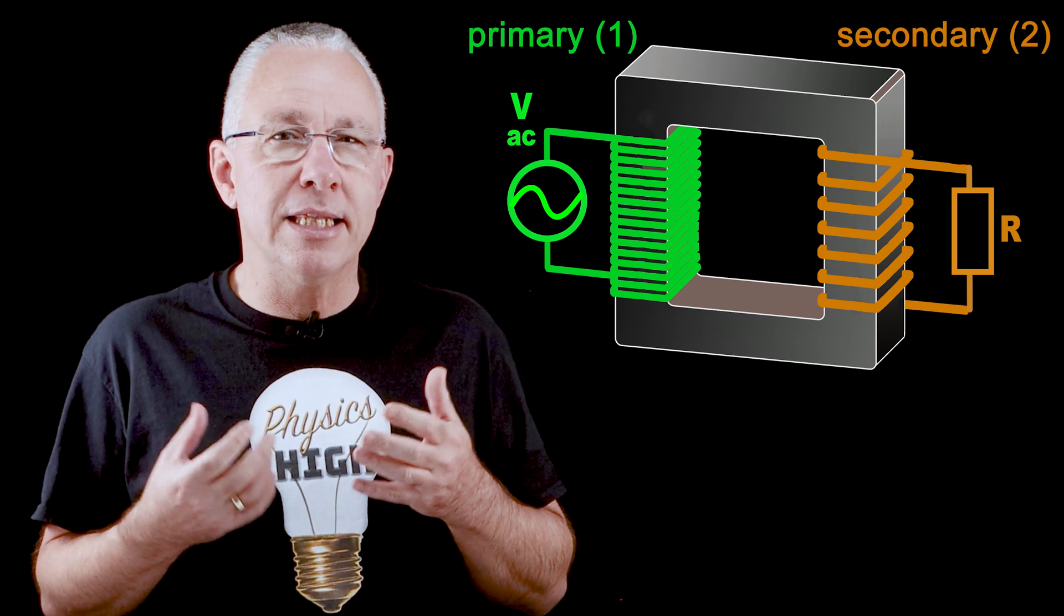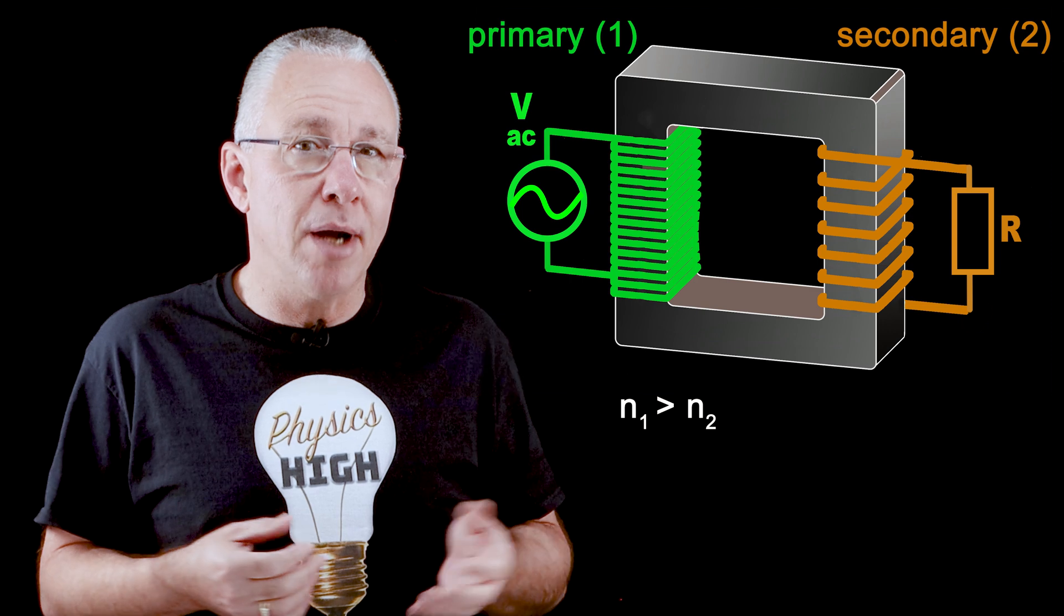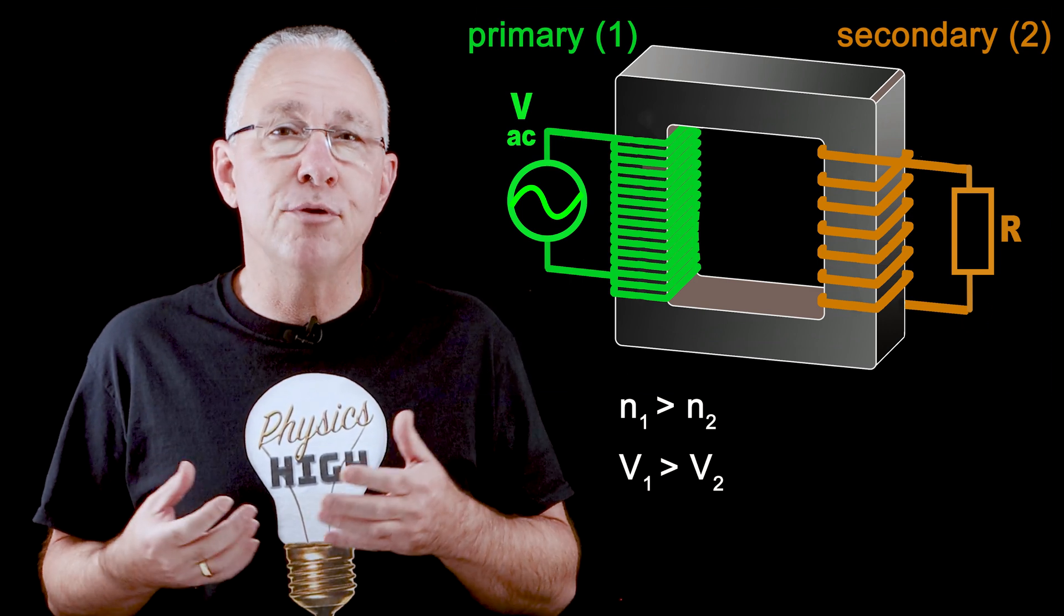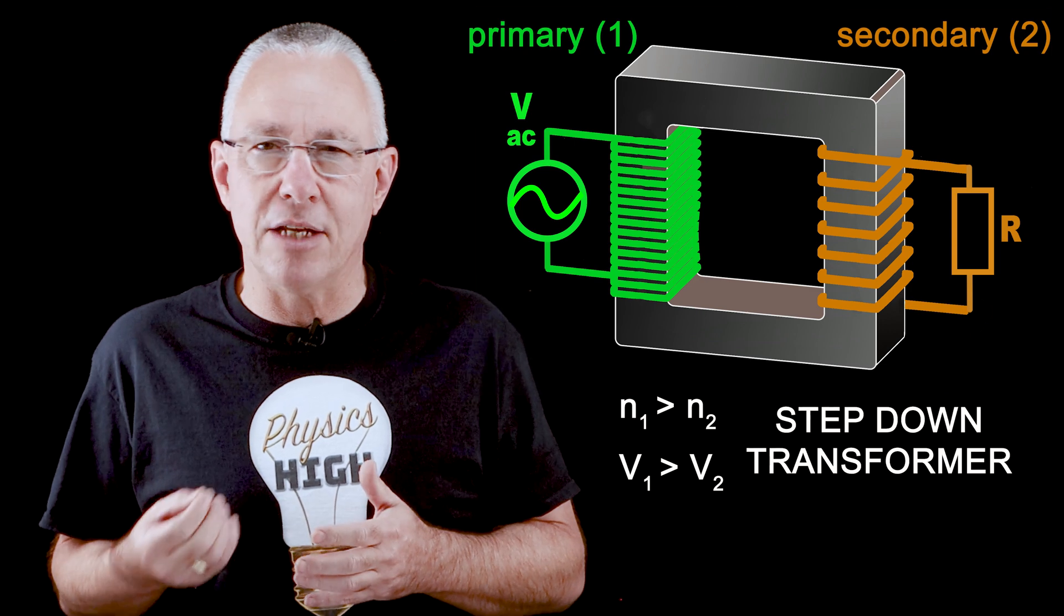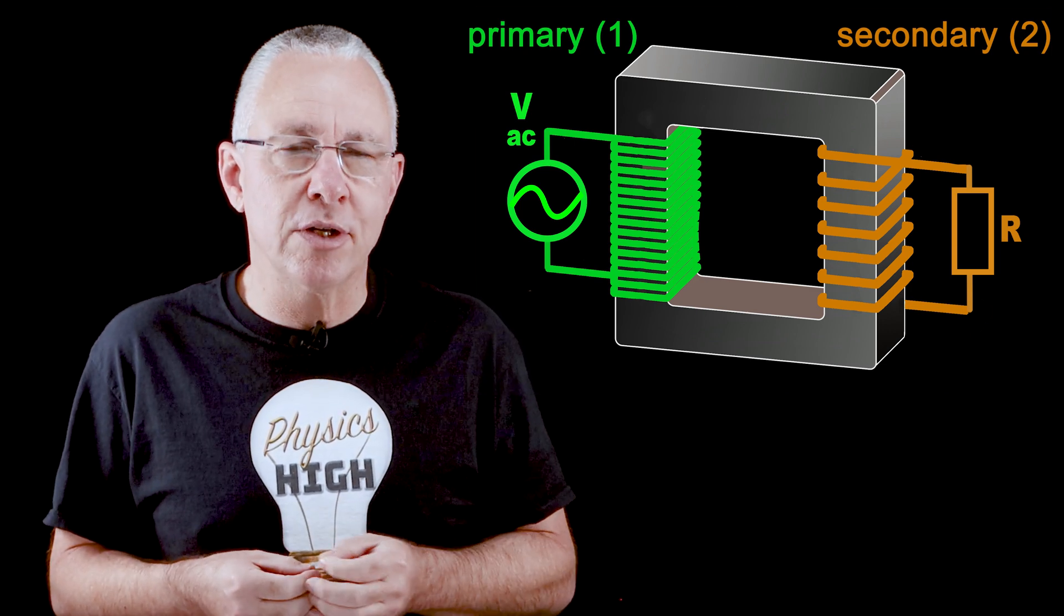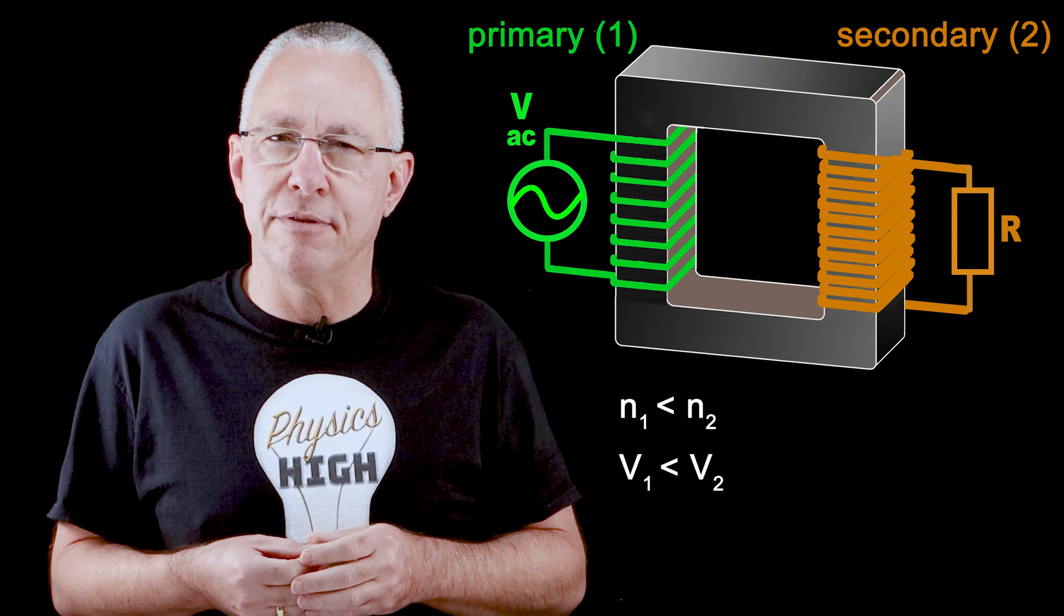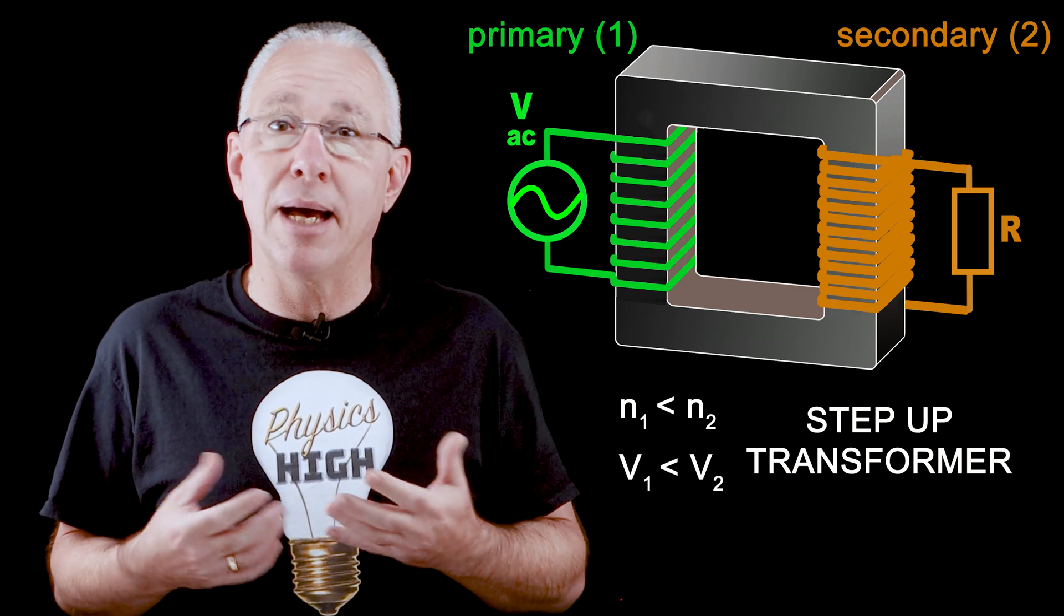Now if the number of turns in the secondary coil is less than the primary coil, we have a reduction in voltage and therefore this is referred to as a step-down transformer. If the number of turns in the secondary coil is greater than the primary coil, we get an increase in the voltage and thus we call it a step-up transformer.